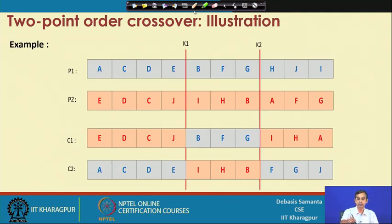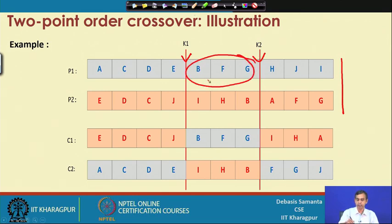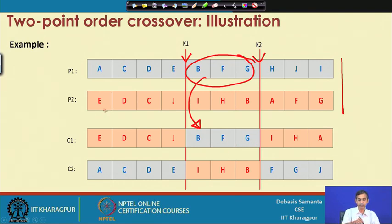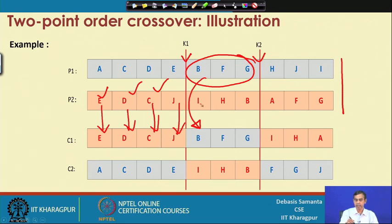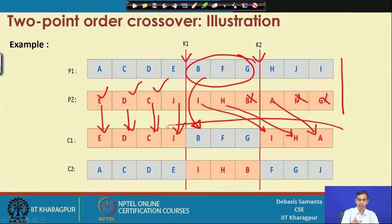For example, with parents P1 and P2 and two k points k1 and k2, the middle part (B, F, G) is copied to C1 first. For the rest, we copy from P2: E should be selected since it is not present, D is selected, C is selected, J is selected, then BFG are already there, so I is selected next, then H, B cannot be copied as it is there, A is copied, F and G already there. This way the children chromosome C1 is obtained.